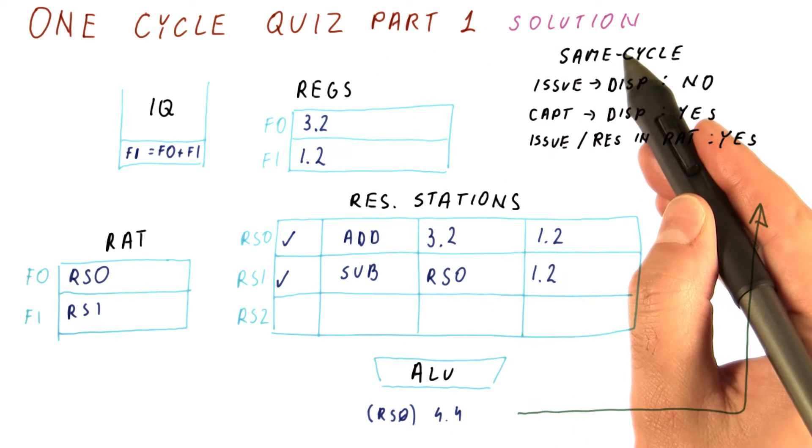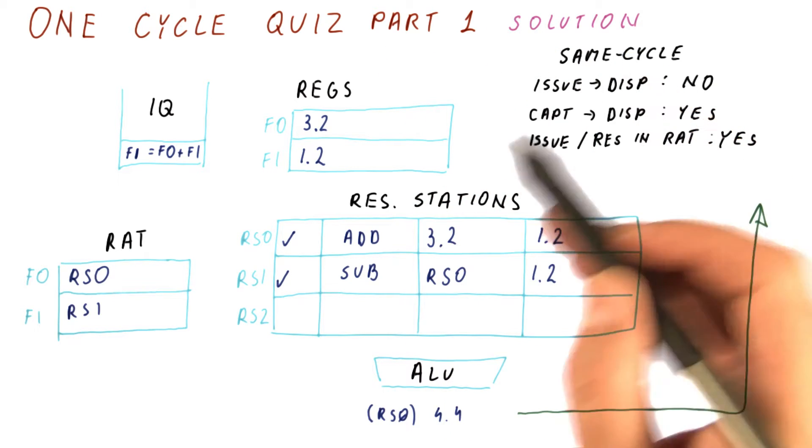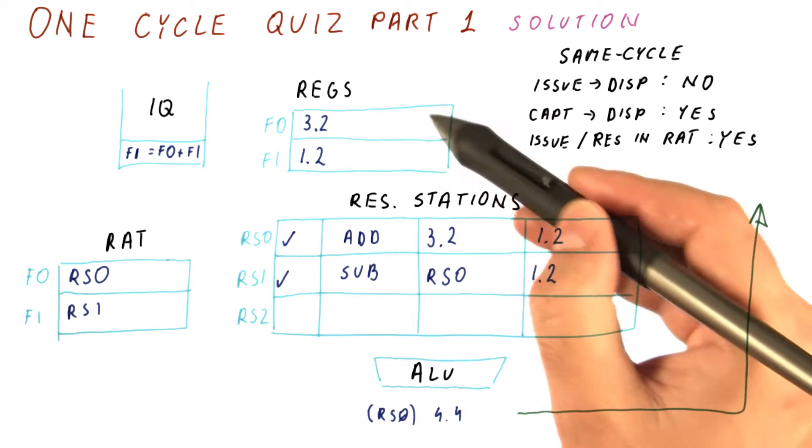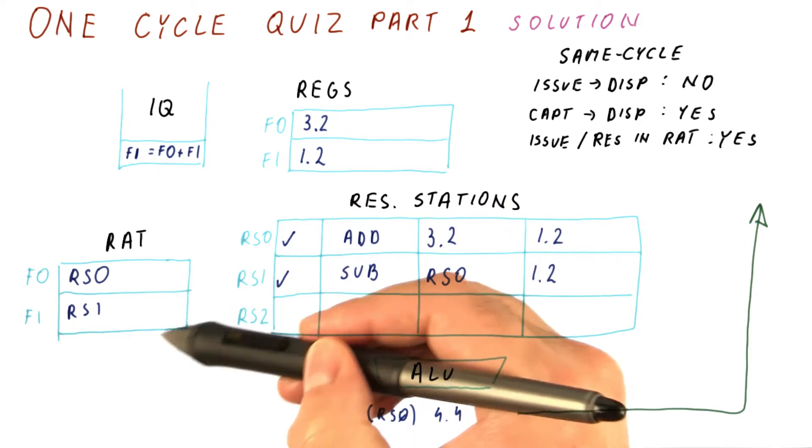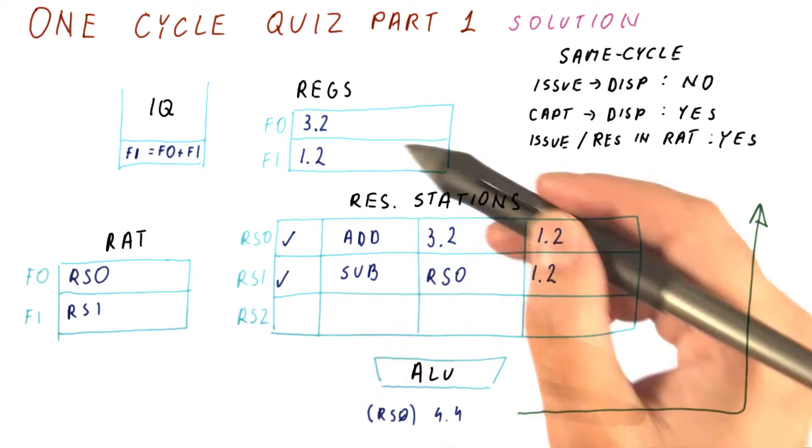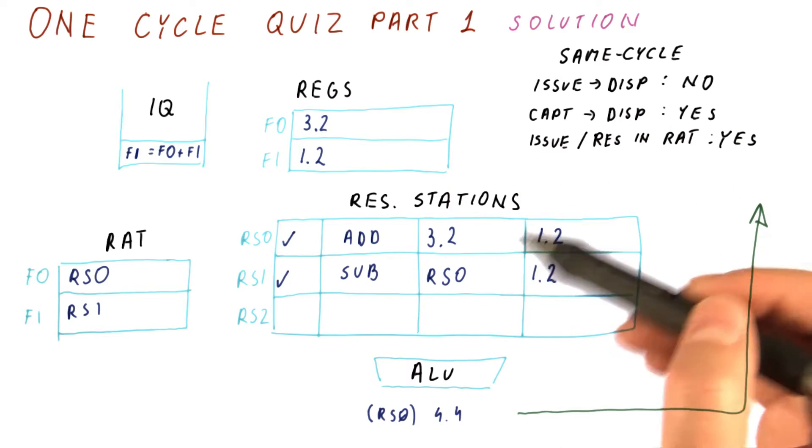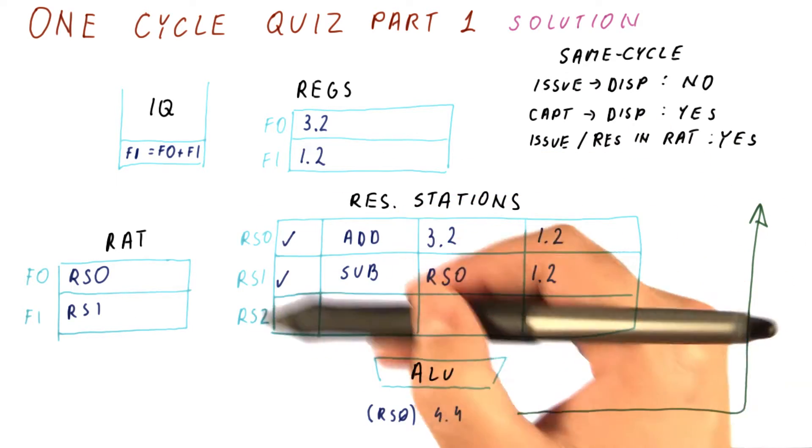Let's look at the solution to the first part of our quiz. The question was, what is in these registers and in these RAT entries? And to answer that, we need to consider all of the things that can happen in this cycle.